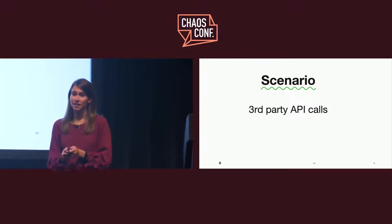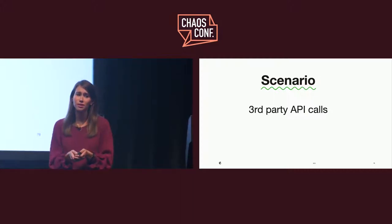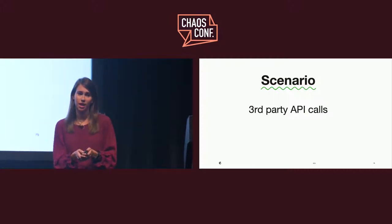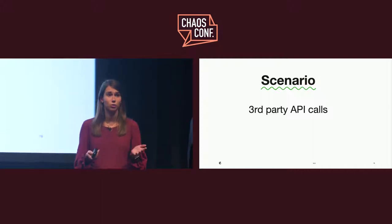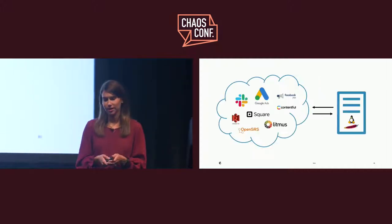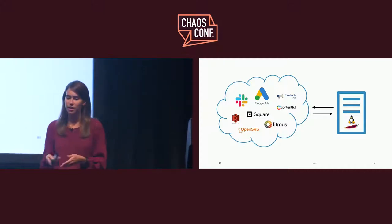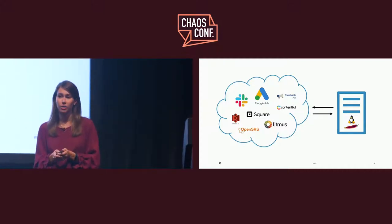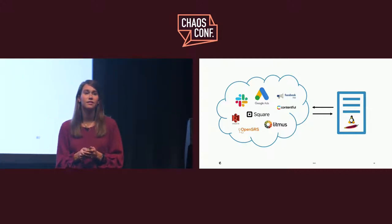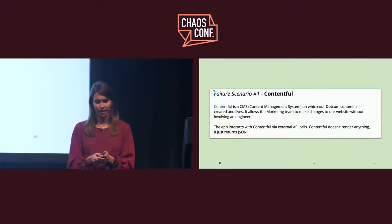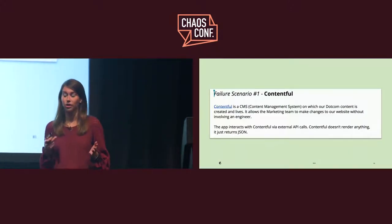Everything has an API these days. We have an API, you have an API, and you're probably using someone else's API. So this is a great scenario to run with some developers in the room. MailChimp uses a lot of integrations — in our API game day that we did a couple of months ago, we focused on Contentful, Litmus, Facebook, and Twitter. For the sake of time, I'm just going to talk about our Contentful experiment.